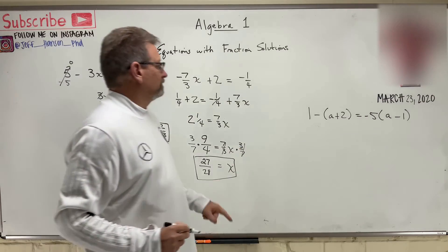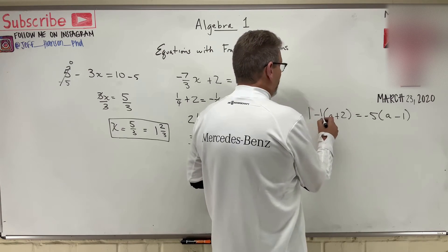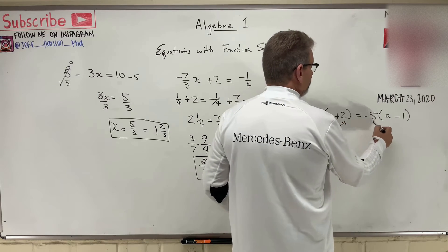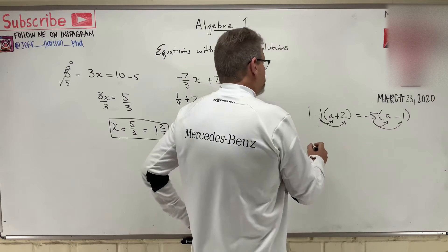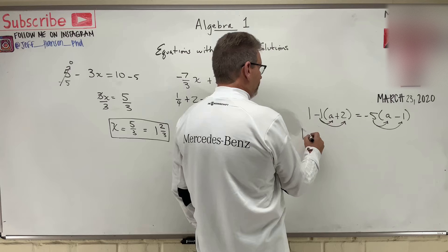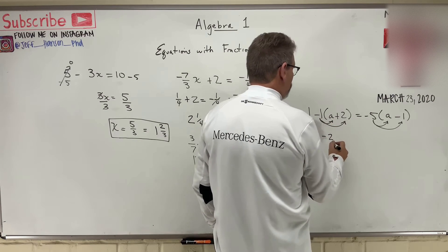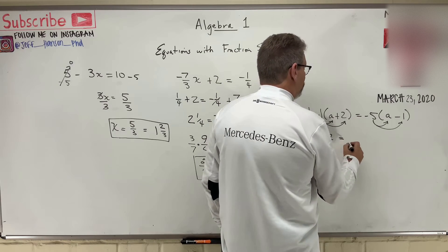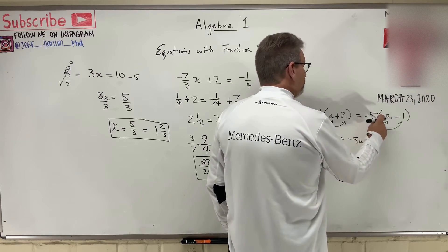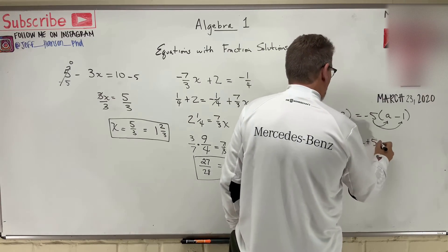Let's try another one. Is this one going to be hard? We've got a little distributive property here. Remember, there's an invisible one in front of this. So let's do our distributive property first. Oh, there's another one over here, isn't there? That gets us one, and then minus one times a is minus a, and then minus one times two is minus two, is equal to minus five times a — minus five a — and then minus five times minus one. A minus times a minus is a positive, right?